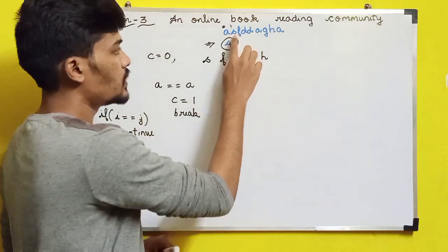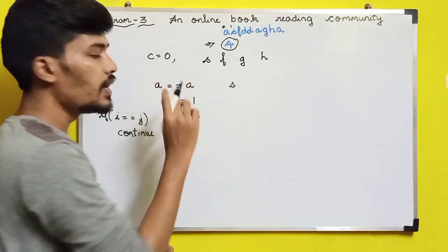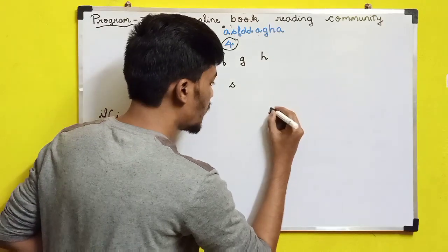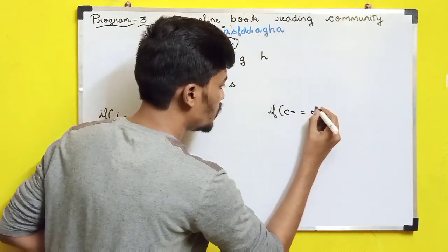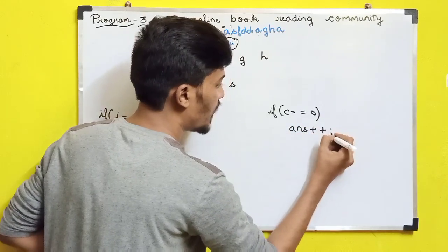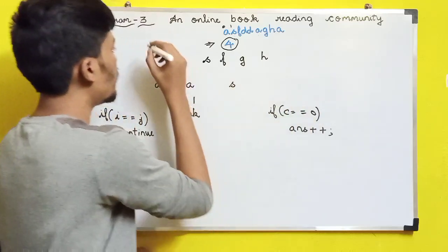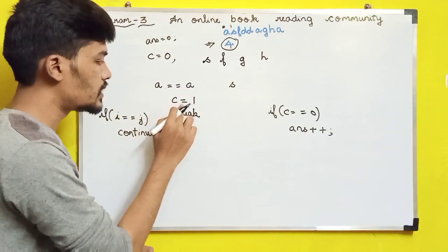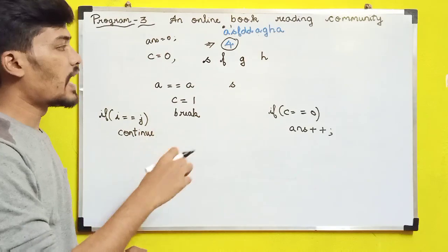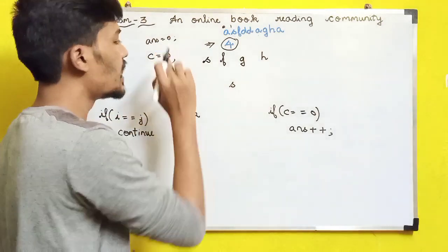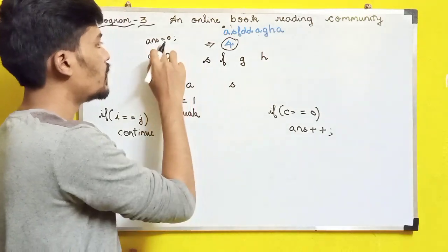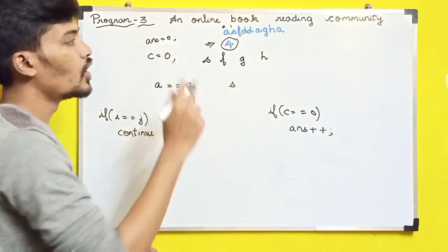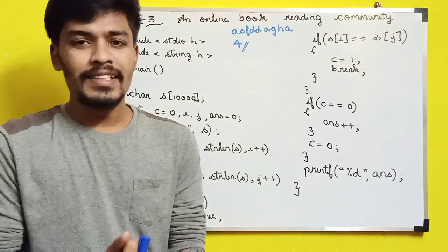S will be checked with all the other characters. C will not be changed to 1 because no other character equals S. So C remains 0. We give another condition: if C equals 0, we increment a variable called 'answer'. We declare answer equal to 0. So S is a unique character and answer becomes 1. Next, F is a unique character, so answer becomes 2. G is 3 and H is 4. So the output of the program will be 4.